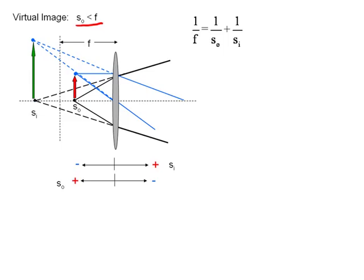If you use a magnifying glass, which is just a positive lens, you have to get the magnifying glass closer than a focal length, then your eye will see an object that appears to be larger.